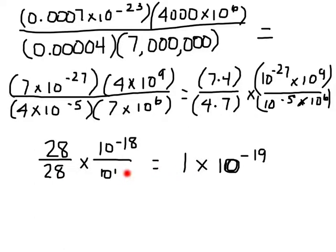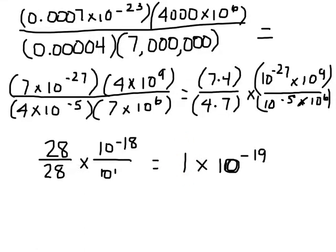Now 28 divided by 28 is 1, and when I move this 1 to the positive 1, it becomes negative 1, leaving me with 10 to the negative 19th. And I didn't have to move any decimals in my final answer because 1 is already in scientific notation form.